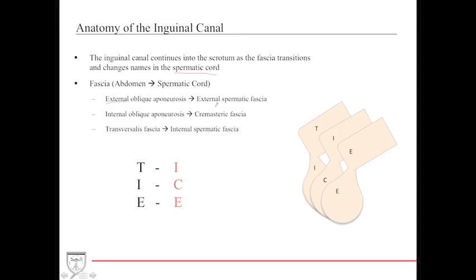The external oblique becomes the external spermatic fascia. The internal oblique becomes the cremasteric fascia. The transversalis fascia becomes the internal spermatic fascia. A great mnemonic: internal spermatic fascia goes with transversalis fascia; cremasteric fascia goes with internal oblique; and the externals go together — remember 'ICE tie.'